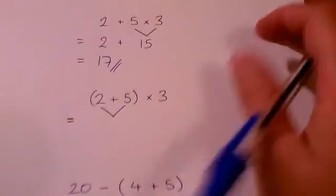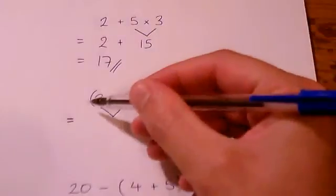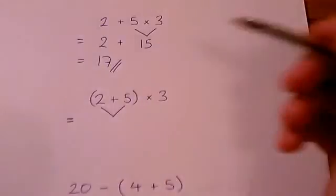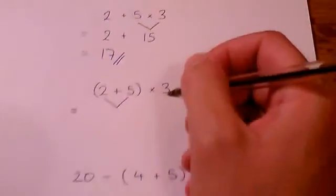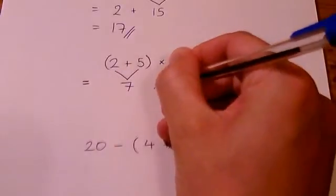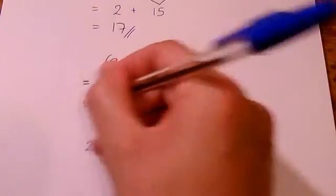So it's the same sum, just got brackets in this position, and it actually turns it into a different sum, into a different calculation. We do the 2 plus 5 first, and we get the answer 21.